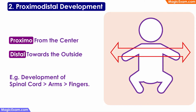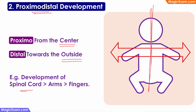The next principle is proximodistal development. Proximo means from the center and distal means towards the outside. This principle says that development happens from the center of the body and moves towards the outside. For example, the spine is one of the first organs to develop, and the arms and legs develop after the spine. The spinal cord must develop first for the baby to control the arms and legs. The baby can move the arms before the fingers. So development starts from the middle and goes towards the outer parts — this is proximodistal development.